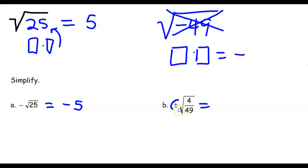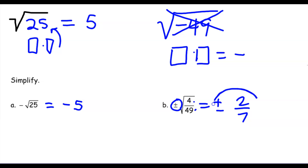This symbol means plus or minus. So if a problem asks for the plus or minus square root, you give both. The square root of 4 is 2 and the square root of 49 is 7, so the answer is plus or minus 2 over 7.